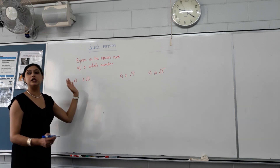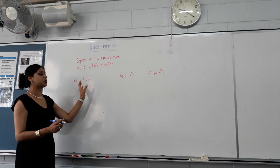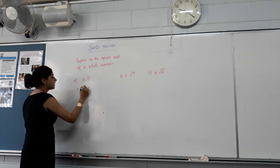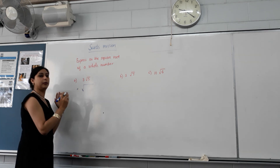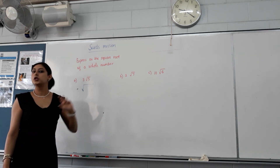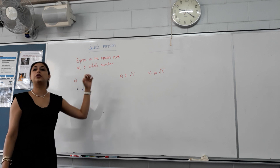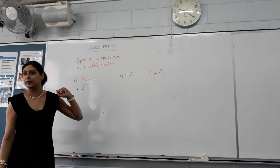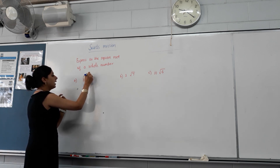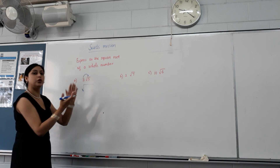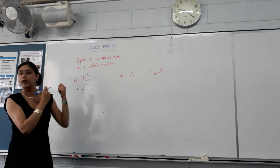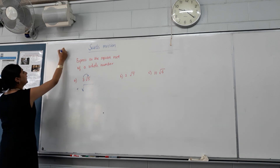We don't want the number in the square root to be the lowest possible one. We want to write it as the root of a bigger number, so that the 3 is not outside anymore. We want to move the 3 inside. When we take something outside, we square rooted it — for example, we square rooted a number.